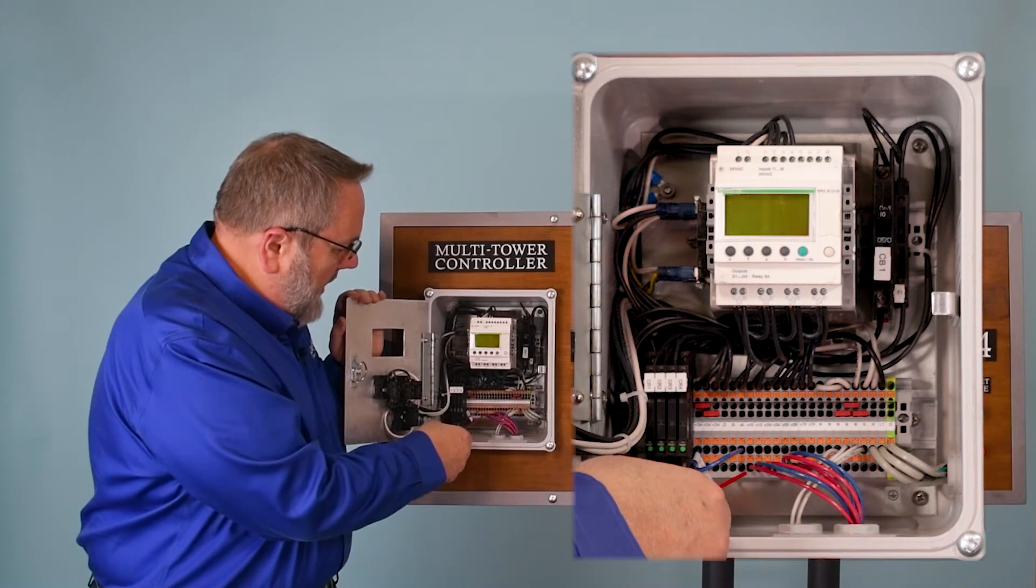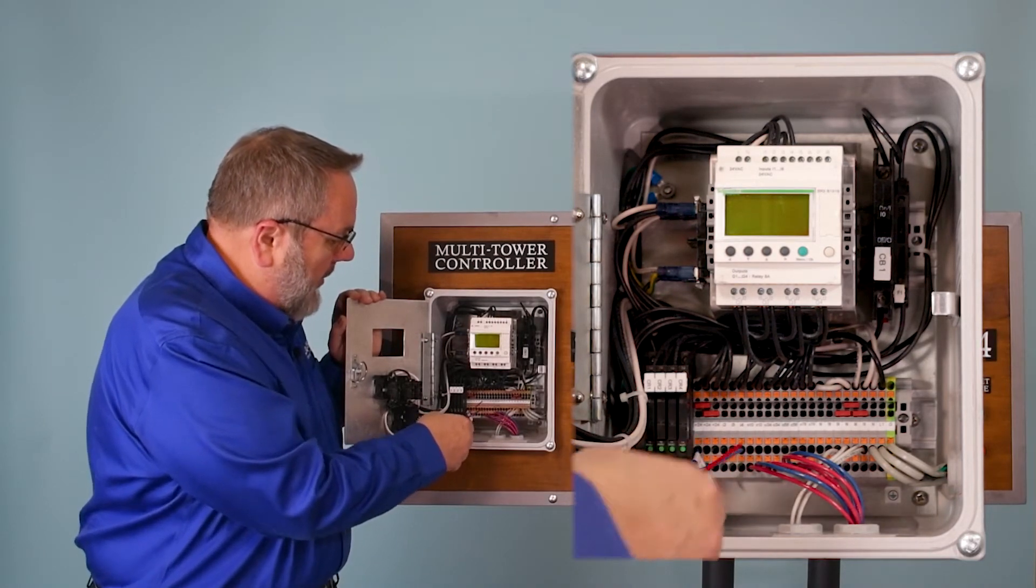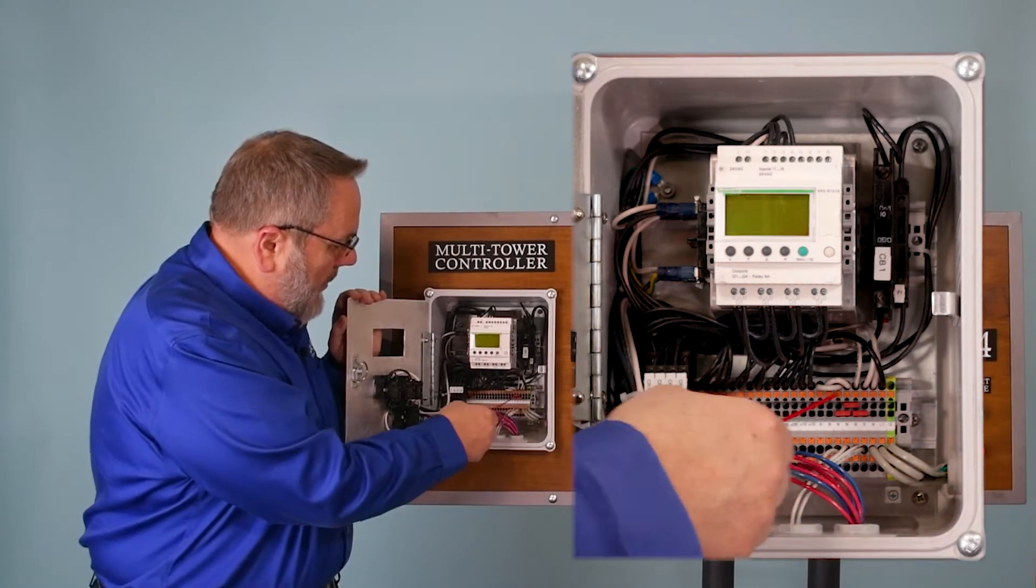So your red and your blue here are directly to your valves as far as your power in to power open, power closed, and then your white wires are your neutrals.